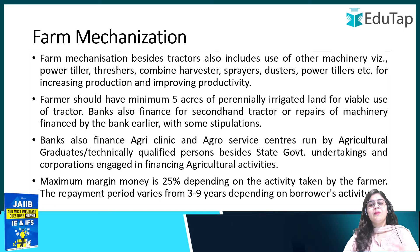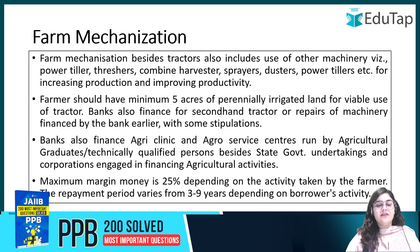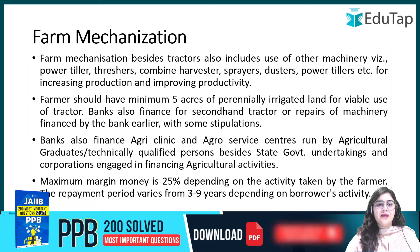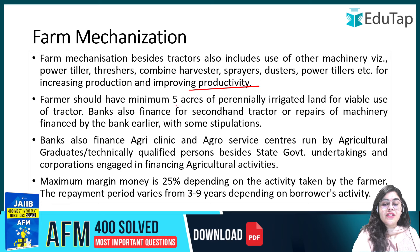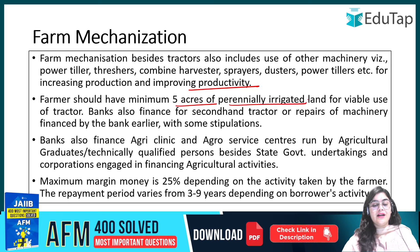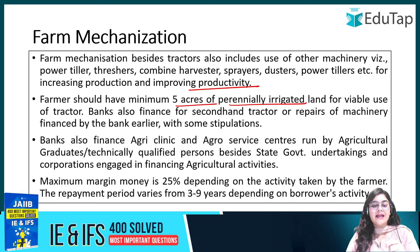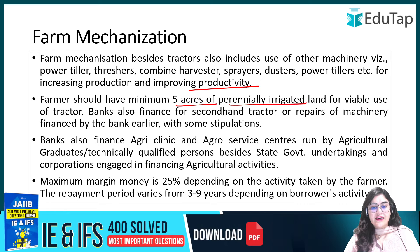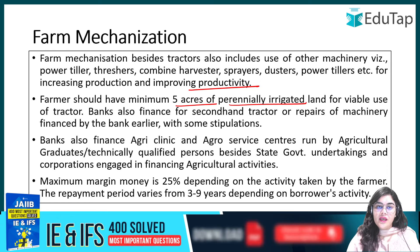For farm mechanization — if you need to purchase machinery like a power tiller, thresher, combine harvester, sprayer, or tractor — you can take a loan to improve your farm productivity. To be eligible for a tractor loan, you should have 5 acres of perennially irrigated land with a reliable water source for irrigation.